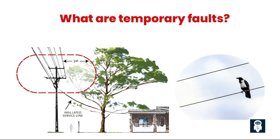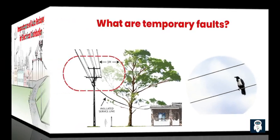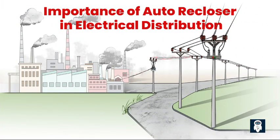Based on statistics and observations, the need for a trip-and-reclose function was readily recognized. If the line could be tripped open momentarily, then a subsequent reclosure very likely would be successful because, by then, the cause of the fault would be gone. Thus, the automatic circuit recloser, in providing this trip-and-reclose function, virtually eliminates prolonged outages on distribution systems due to temporary faults or transient overcurrent conditions. The auto-recloser plays a crucial role in maintaining a reliable and uninterrupted power supply.